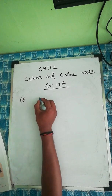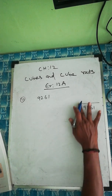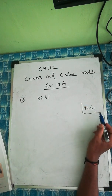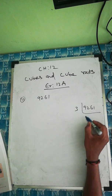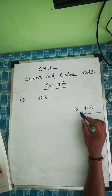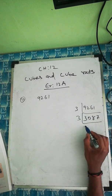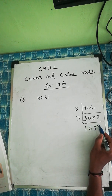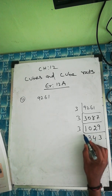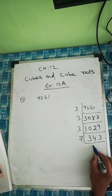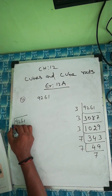Second one: 9261. We'll divide it. We try 3 first. 3 into 3 is 9, then dividing step by step: 9261 divided by 3 gives 3087, then 3087 divided by 3 gives 1029, then 1029 divided by 3 gives 343. Then we try 7: 343 divided by 7 gives 49, 49 divided by 7 gives 7, and 7 divided by 7 gives 1. So 9261 gives three 3s and three 7s when factorized.